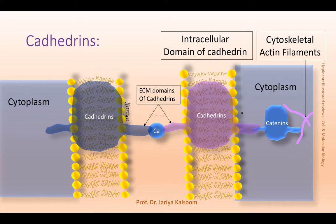Cadherins hold the cells together and maintain integrity of tissues. They act as transmembrane linker proteins with an extracellular domain that binds the cadherin on a neighboring cell. Cadherins also have intracellular domains that bind linker proteins of the catenin family, which bind to actin filaments of the cytoskeleton. Calcium is required for binding of cadherin to another cadherin, so when cells are linked by cadherins, the cytoskeletons are also linked indirectly. Adhesion due to cadherins is long lasting and important in maintaining tissue structure.